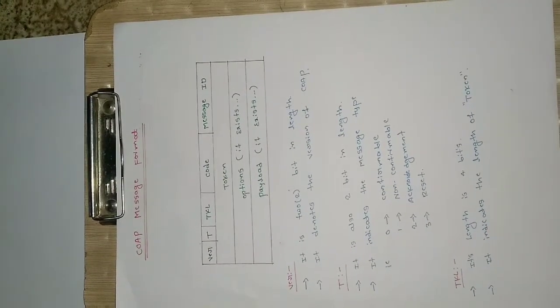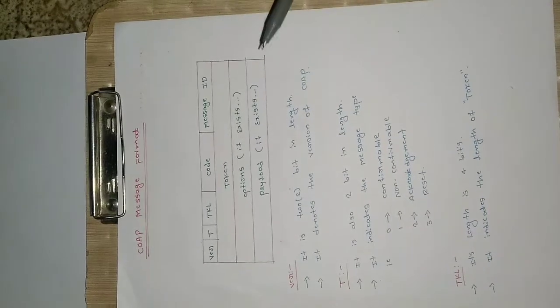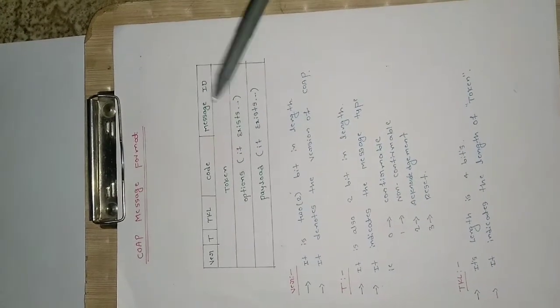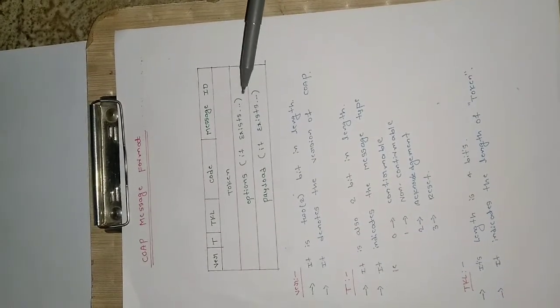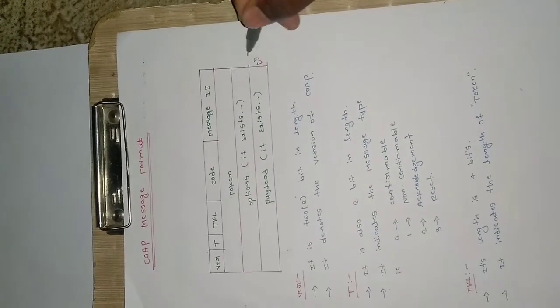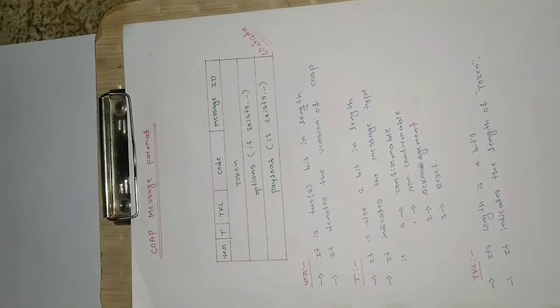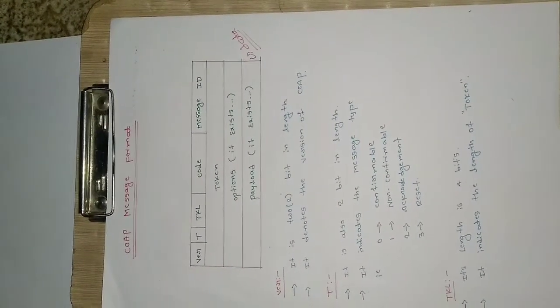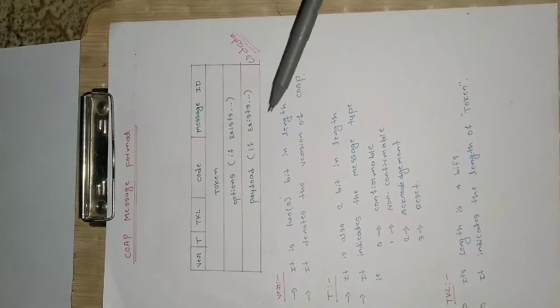Coming to the CoAP message format, it has got some parameters. The first one is the version, indicated as 'ver', then 't', then 'tkl', then 'code', and following that is the message ID. Below that the token will be there, then options if they exist, and the payload. The payload indicates the actual data which has to be transferred — it is equivalent to the data itself.